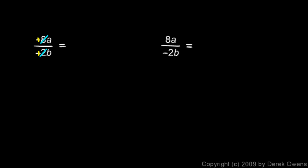And, I can reduce this 8 and the 2 to a 4 over 1. And, so, I'm just left with 4a over b for my answer with no negative signs because those negative signs have canceled out.